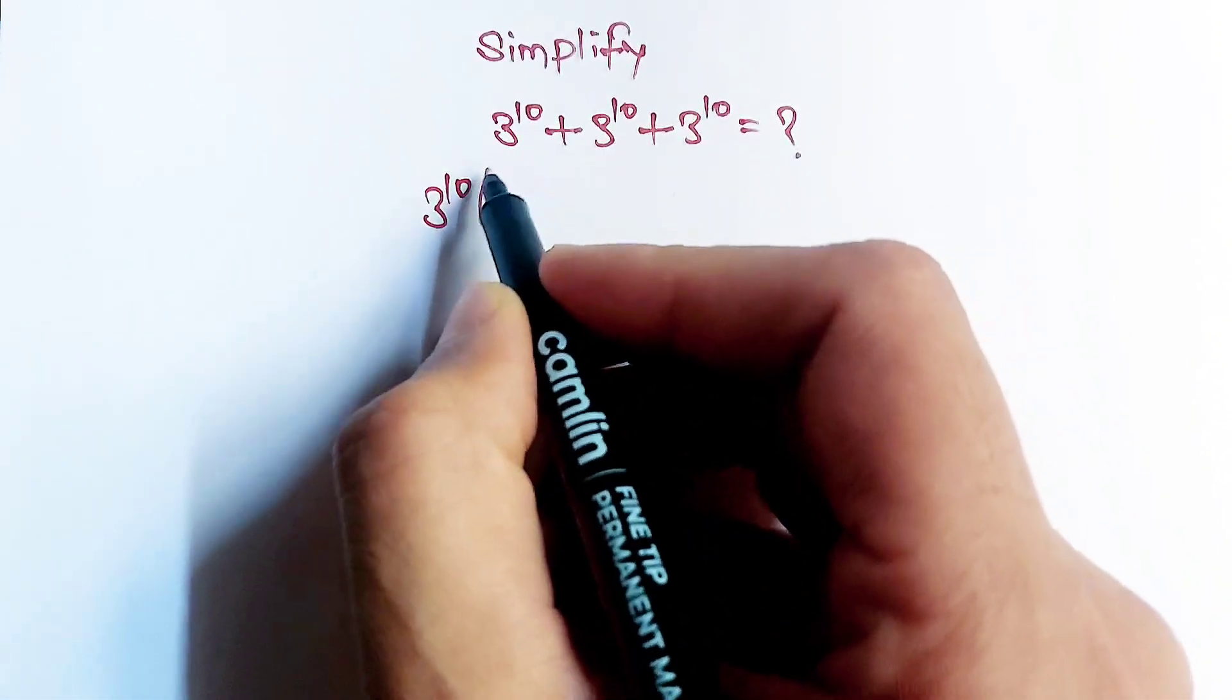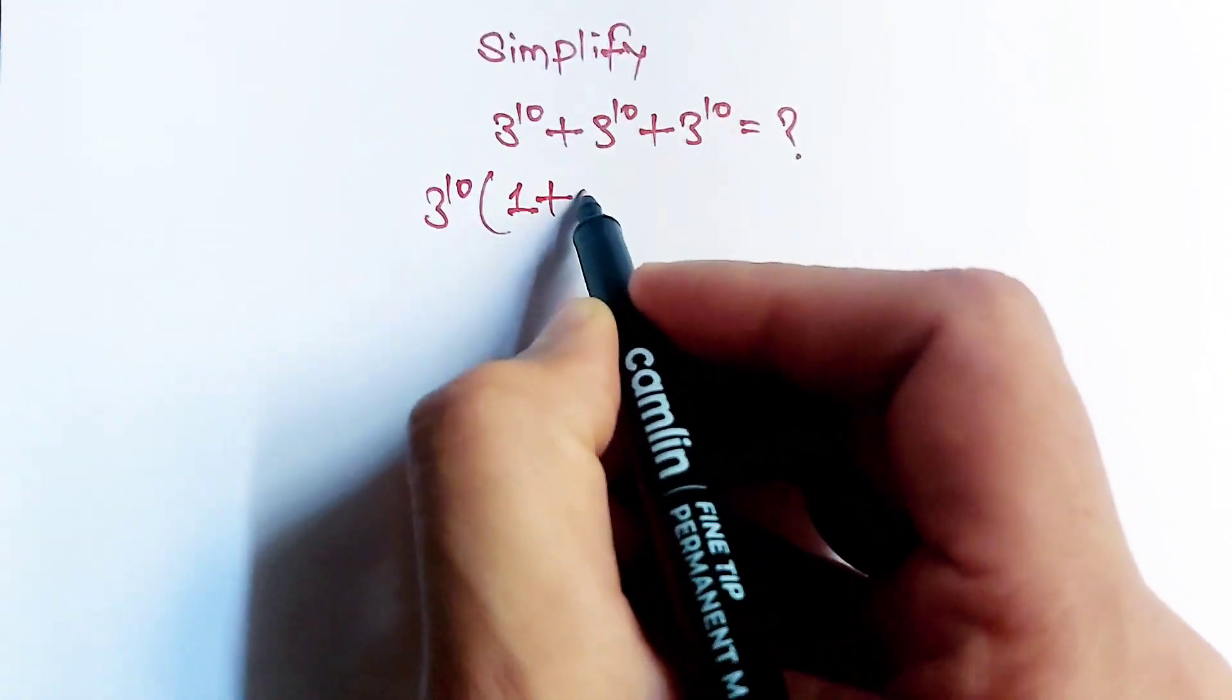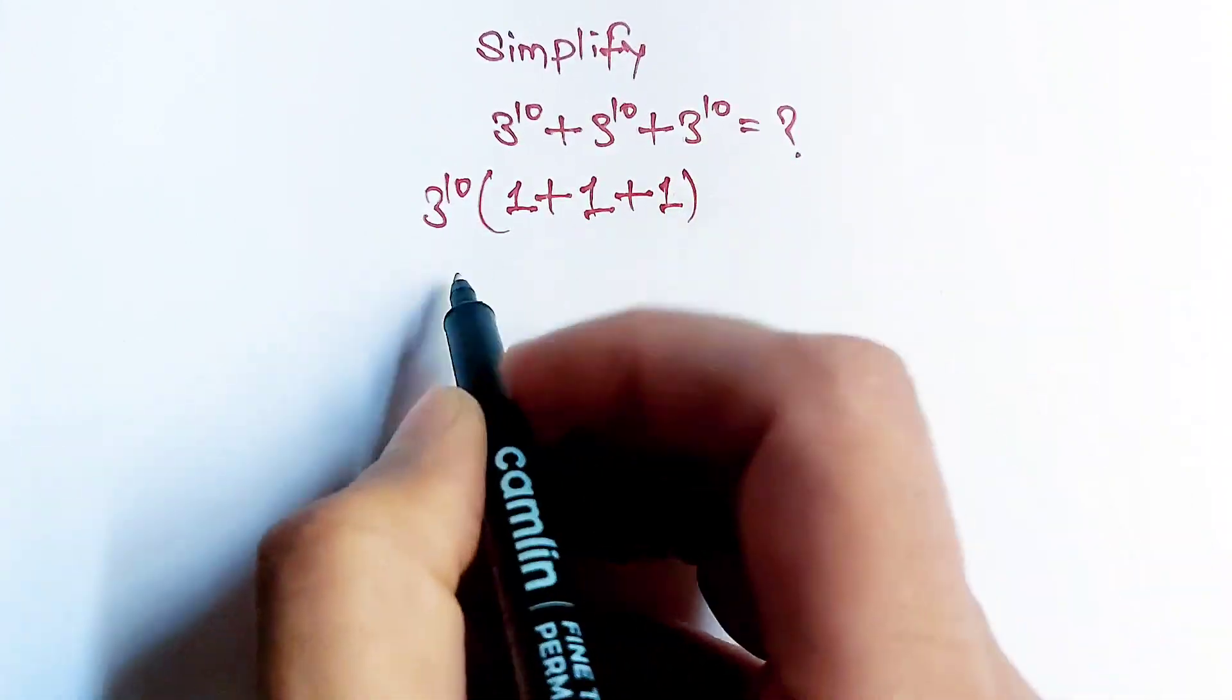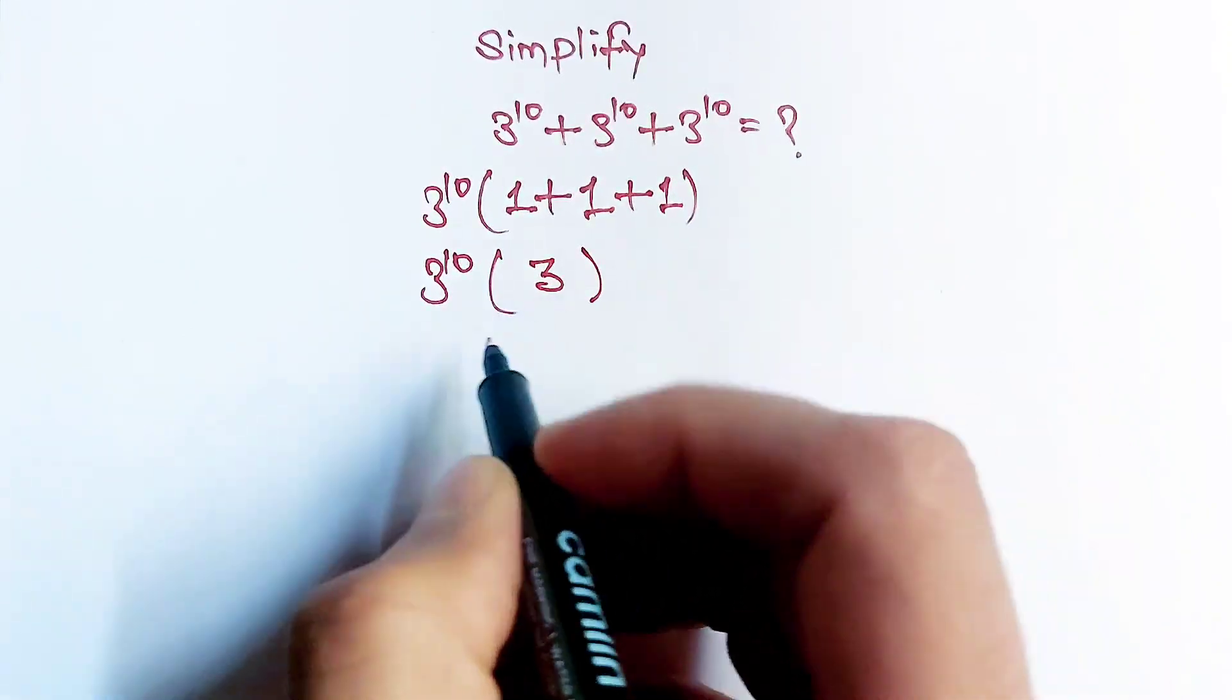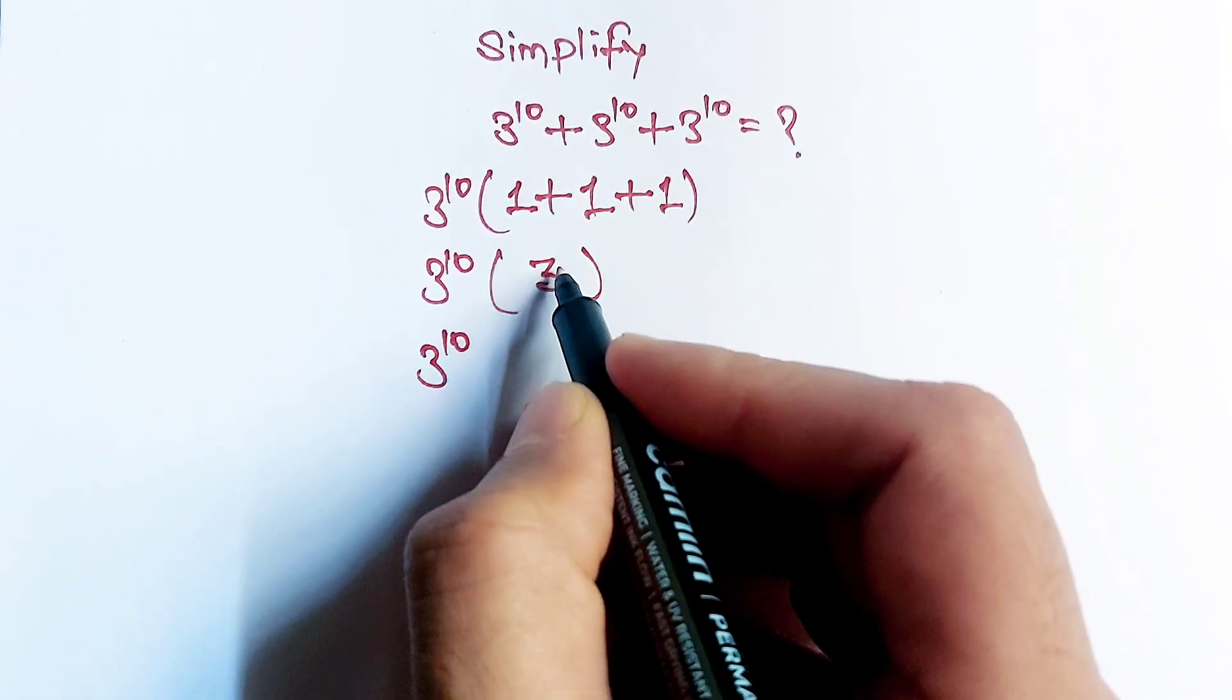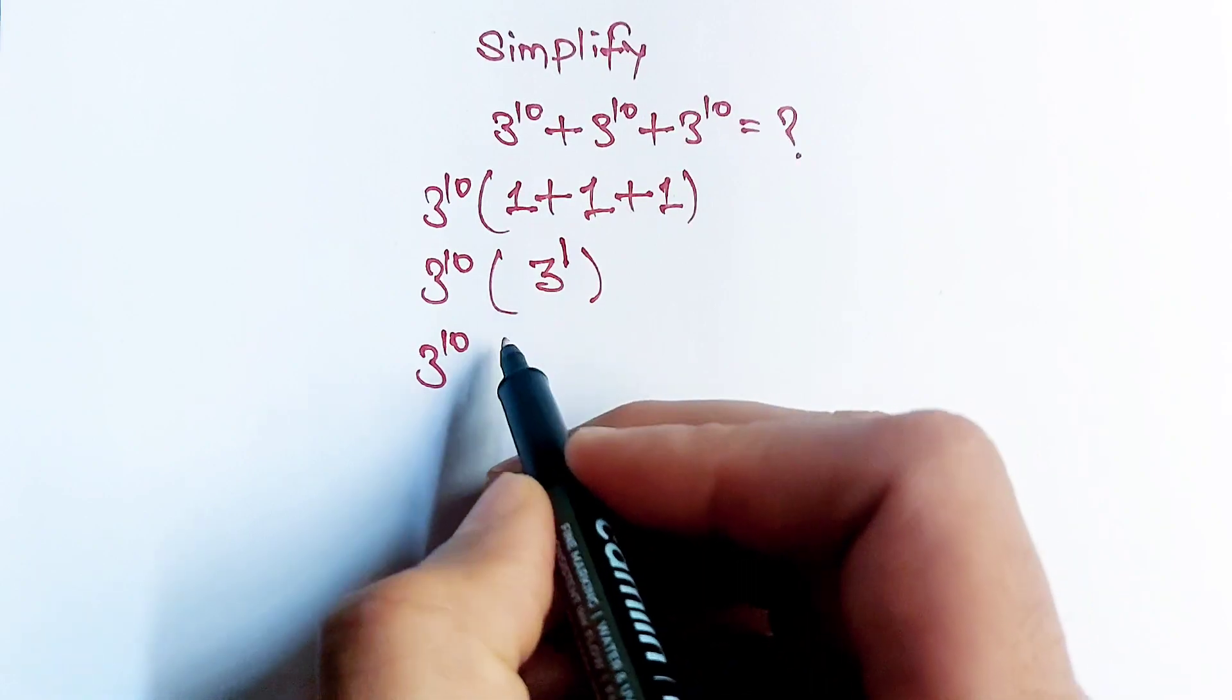Here one is left, here also one is left, and one is left. Now 3^10 times (1 + 1 + 1) equals 3^10 times 3. This 3 is also equal to 3^1.